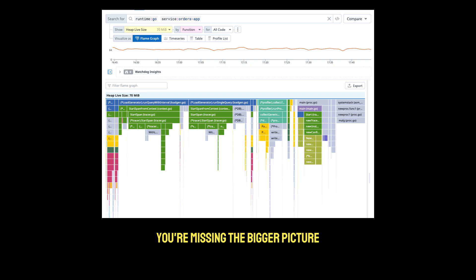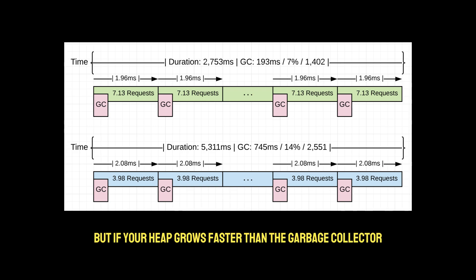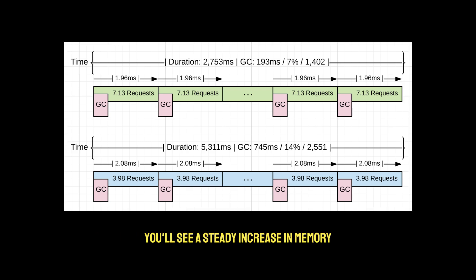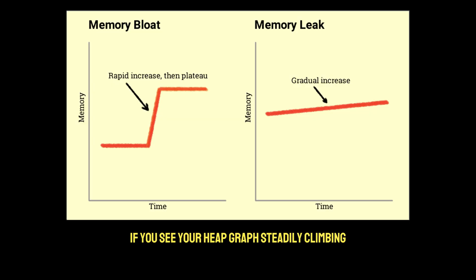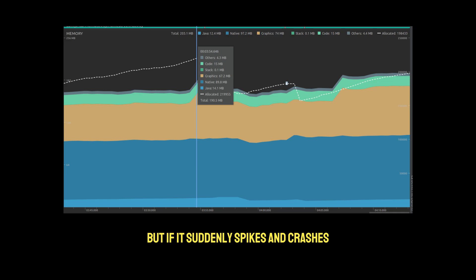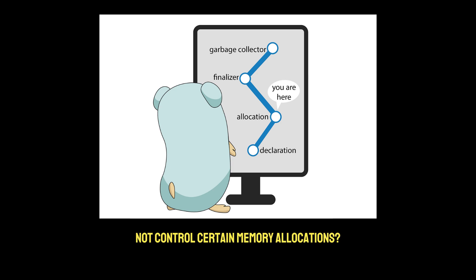But if you're only looking at the heap, you're missing the bigger picture. The garbage collector runs periodically and reclaims memory, but if your heap grows faster than the GC can clean it up, you'll see a steady increase in memory. The heap size depends on two factors: garbage collector pressure and allocation rate. If you see your heap graph steadily climbing, you might have a memory leak. But if it suddenly spikes and crashes, it's often native memory, not the heap.